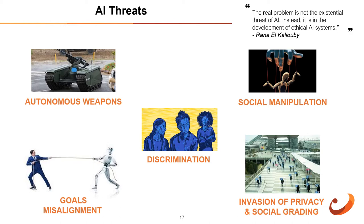Discrimination: since machines can collect, track, and analyze so much about you, it's very possible for those machines to use that information against you. For example, an insurance company could tell you you're not insurable based on the number of times you were caught on camera talking on your phone, or an employer might withhold a job offer based on your social credit score.